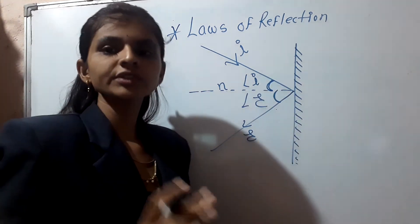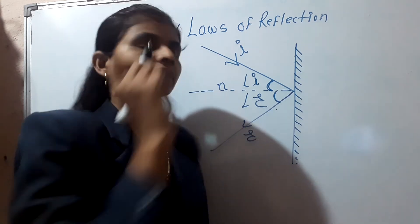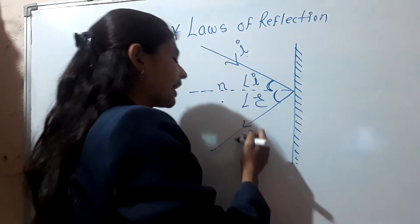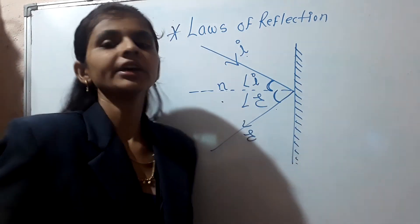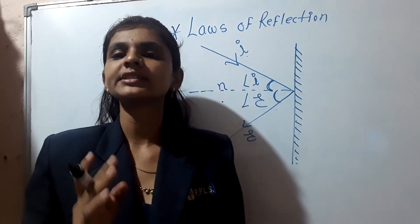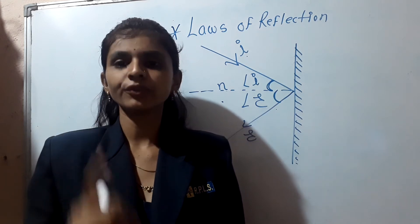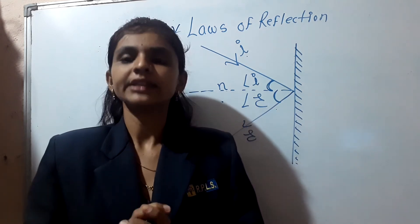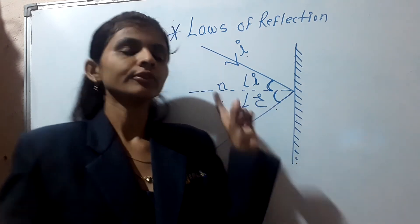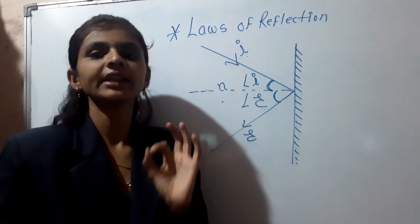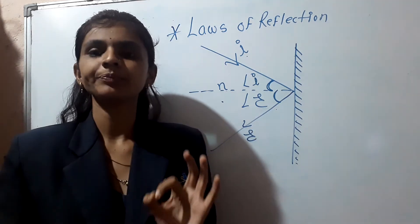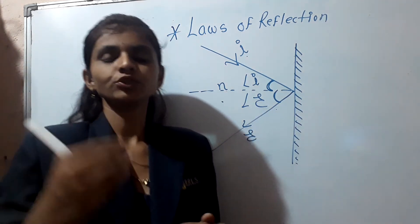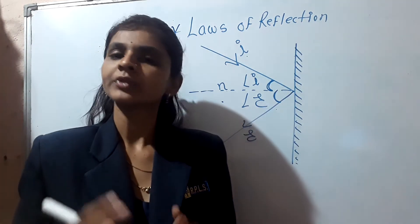The first law of reflection states that the incident ray, normal ray, and the reflected ray all lie in the same plane.